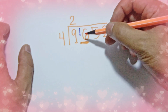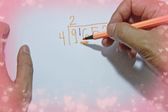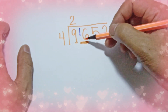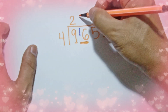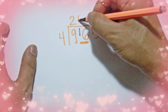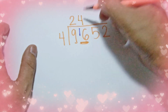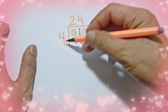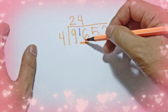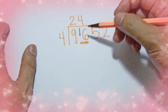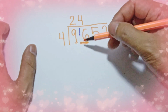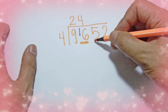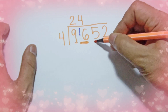How many 4s can you make from 16? We can make 4, because 4 times 4 is 16. The remainder is 16 minus 16 equals 0, so no more remainder. We proceed to the next number.